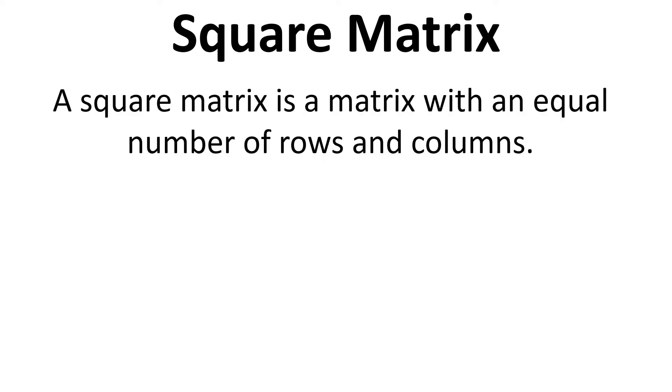Now before we look at the identity matrix in detail, just a note on the square matrix. A square matrix is any matrix with an equal number of rows and columns. So here's an example of a 3 by 3 matrix and this is referred to as a square matrix because it has an equal number of rows and columns.